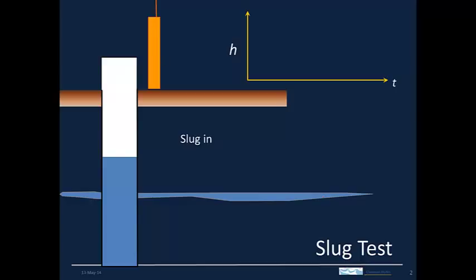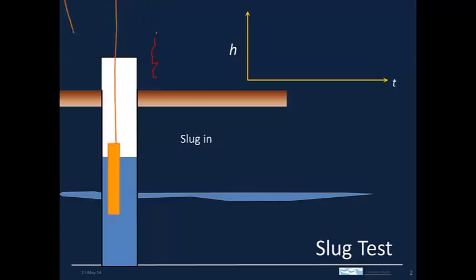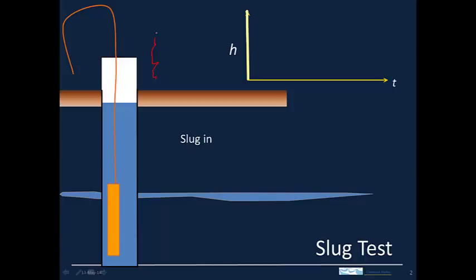This thin fracture represents perhaps a permeable fracture in the lower well field. Up here is a slug, and in order to conduct the test, we'll drop it in the well. The slug is a cylinder that is heavier than water, with a rope attached, so when we drop it in the well it sinks and displaces an amount of water equal to its volume. The first step is to drop the slug in the well, which raises the water level by an amount equal to the volume of the slug.